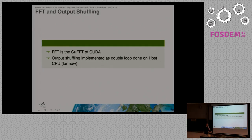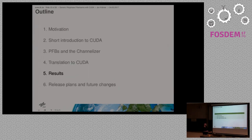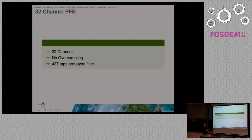The FFT is just cuFFT, provided by CUDA — it's fast and convenient, so why not use it. The output shuffling is implemented on the host CPU for now since I was lazy. I don't expect much of a performance boost — maybe a single-digit percentage — but it would be nice to have everything on the GPU. At the time it was plenty fast enough.